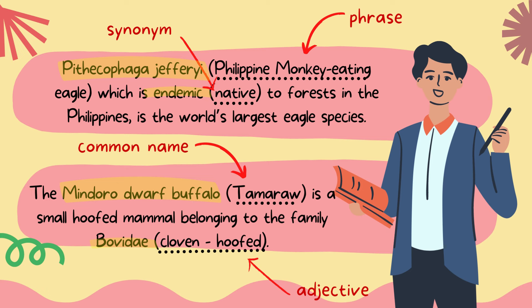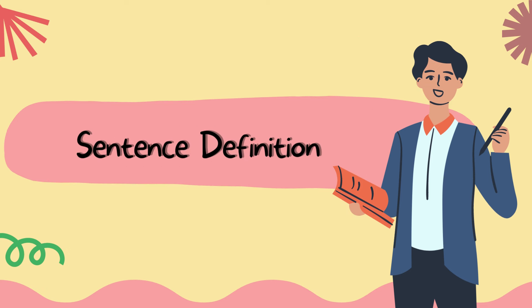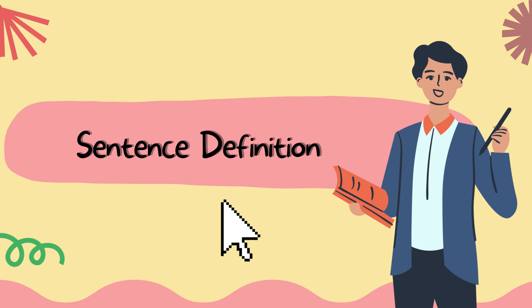Usually, it is simply a few extra words that describe the term. When a parenthetical definition is insufficient, a more detailed definition is required. In this case, we can employ sentence definition.